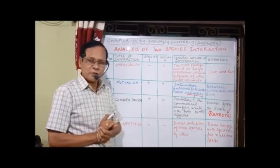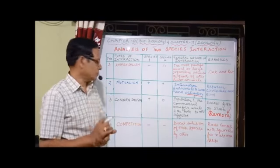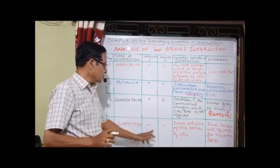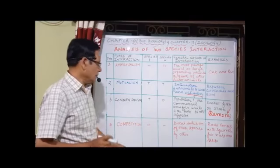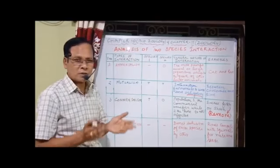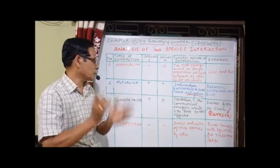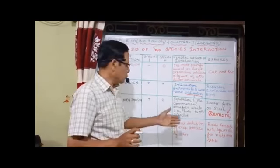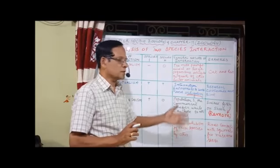Then competition, represented by minus minus: there is a loss for both partners because of competition. There is direct inhibition of each species by the other — both attacking each other, so there is a loss for both partners. For example, birds and squirrels compete for nuts and seeds.